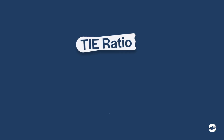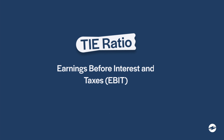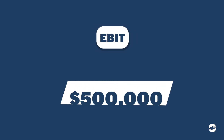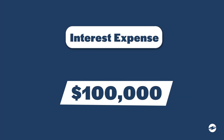The formula is simple: it's the company's earnings before interest and taxes (EBIT) divided by its interest expense. Let's check out an example. Imagine Jack's tool store has an EBIT of $500,000 and an interest expense of $100,000.